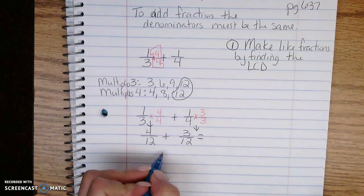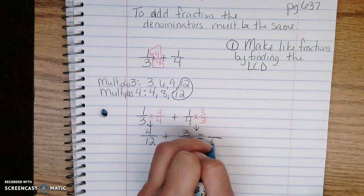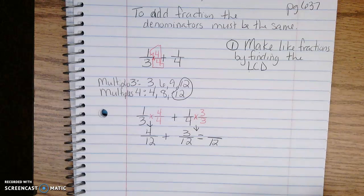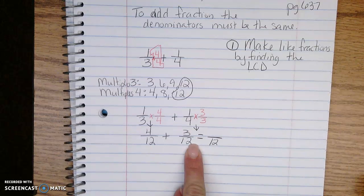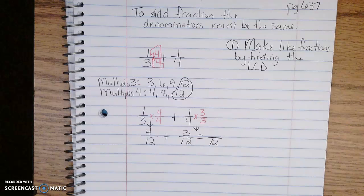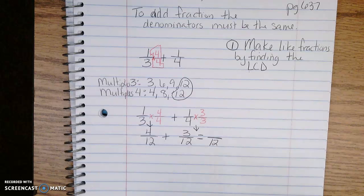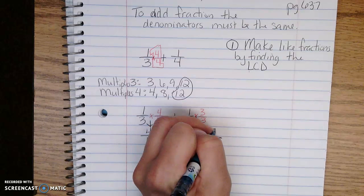Remember, when I add fractions, I never, ever, ever add or subtract a denominator. The denominator just moves over. Then I have to add 4 plus 3, which is 7.